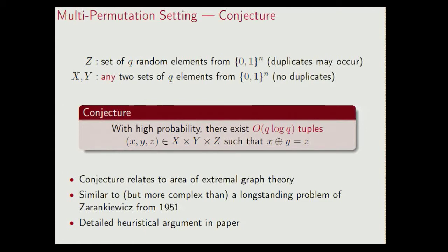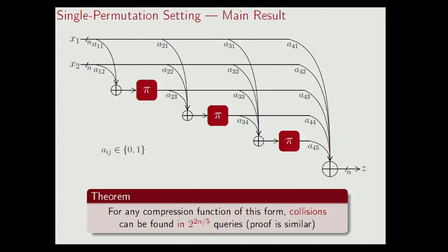For the single permutation setting, we proved the following result. We considered this design where the three permutations are the same, and we proved that for any compression function of this form, collisions can be found in at most 2^(2n/5) queries. In other words, there does not exist any compression function of this form that achieves optimal collision security. In the paper, we also generalized this to a construction where we have constant inputs extra to the permutations — where the input to the first permutation is a11 times x1 XOR a12 times x2 XOR b1 for a constant b1 — and the result still holds. Note that this also rules out the customary approach of constructing three different permutations from a single one using a constant as XOR input.